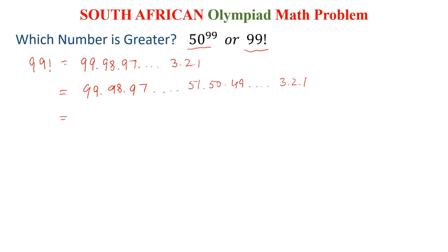Then we can write 50 into 51 into 52 into up to 99 and into 49 into 48 up to 3, 2, 1. This is the same step, but we just rearrange it.